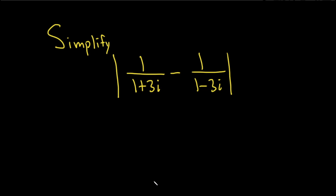In this problem we have to simplify this expression. So these bars denote something called the modulus. So if you have the modulus of a plus bi, this is equal to the square root of a squared plus b squared.